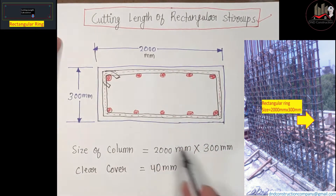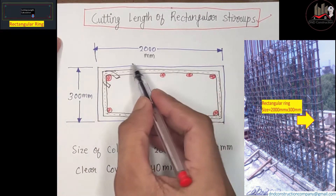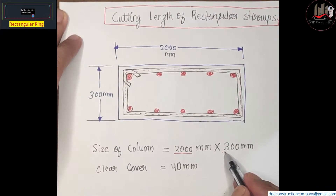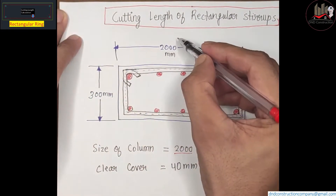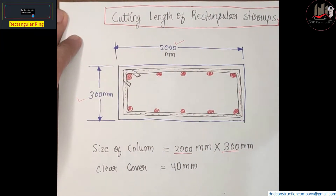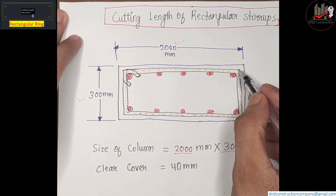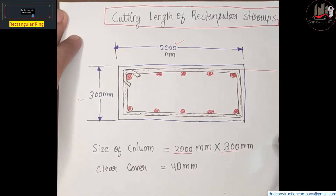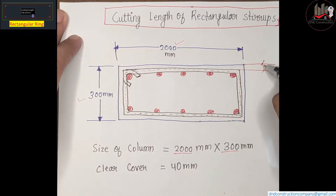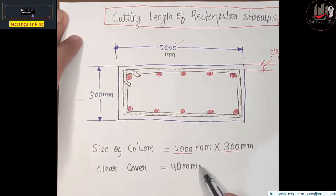As you can see, this is our section of column. The size of column is 200 mm by 300 mm. Clear cover is the distance between the outer face of bar to the outer face of concrete. This clear cover is given as 40 mm.